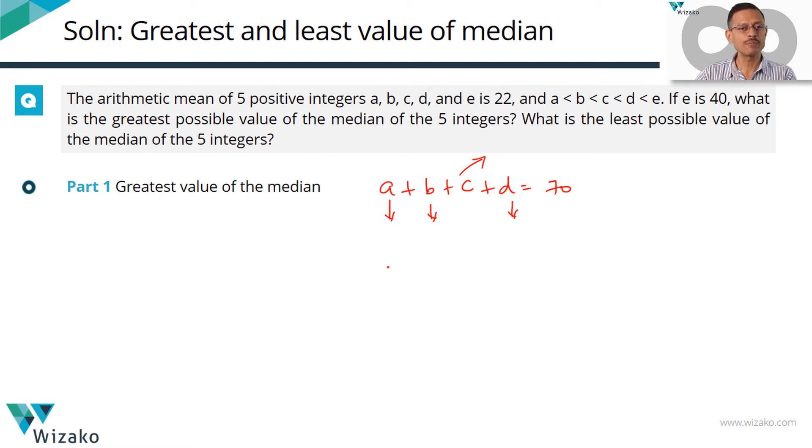The least possible value for A and B, given that they are positive integers, could be 1 and 2. Let's get started with that. If it makes sense, let's go with it. If that is not the minimum value, let's rework it. So A and B are 1 and 2.